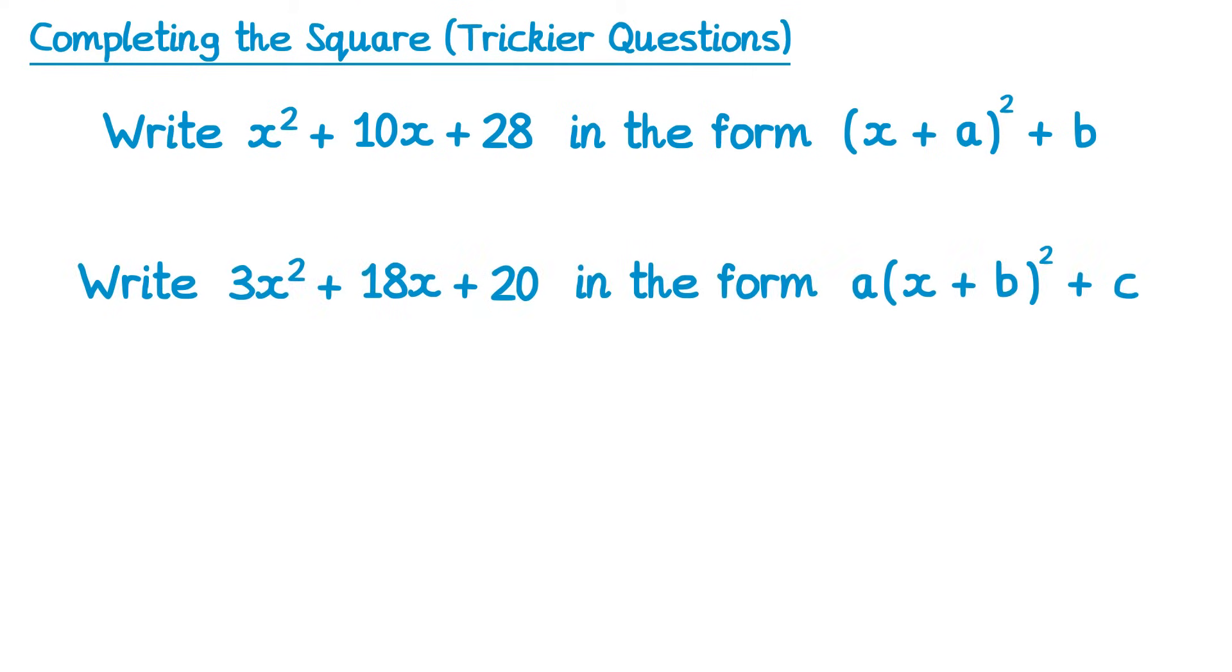The main difference here is the number right at the front of the question, in this case a number 3. This is known as the coefficient of x squared. In the last video the coefficient of x squared was always 1, so it just said x squared, but this time there'll be a number in front of it. So the coefficient of x squared is no longer 1.